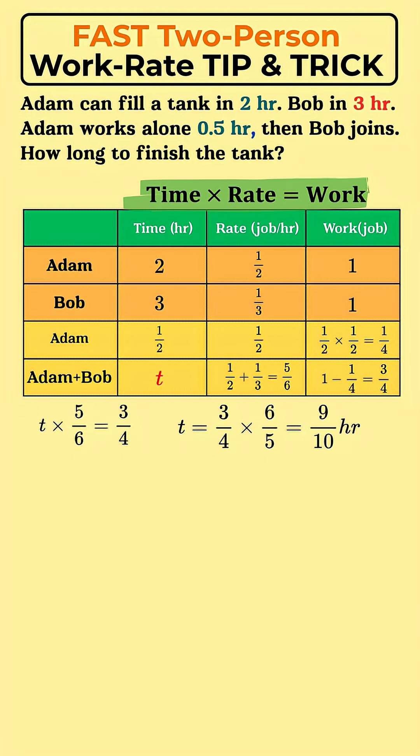To find T, divide 3 fourths by 5 sixths. That's 18 over 20, or 0.9 hours.